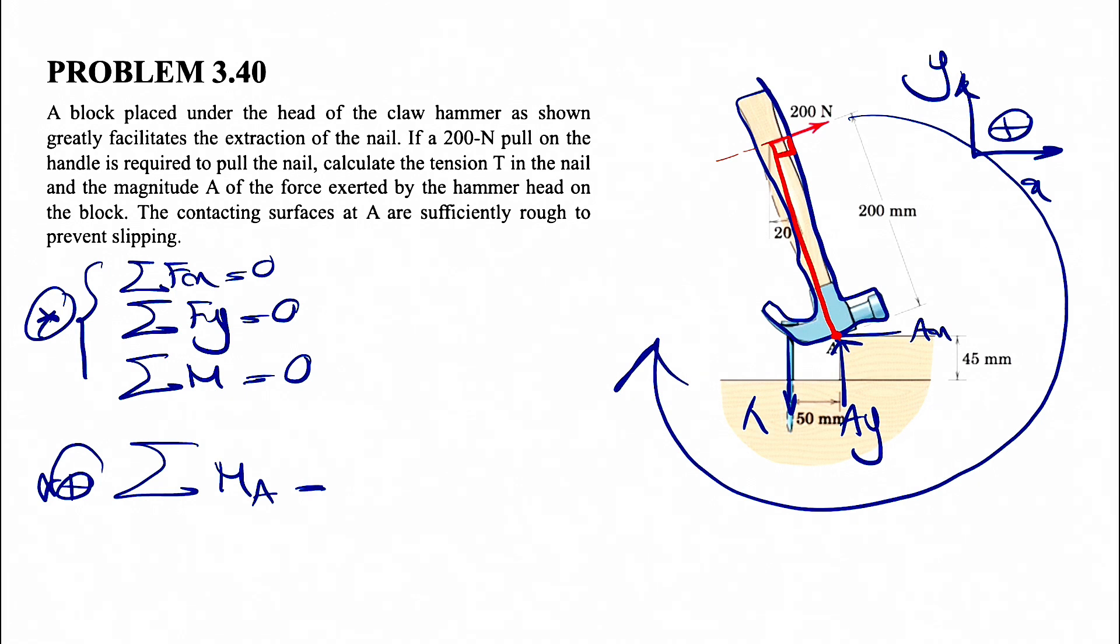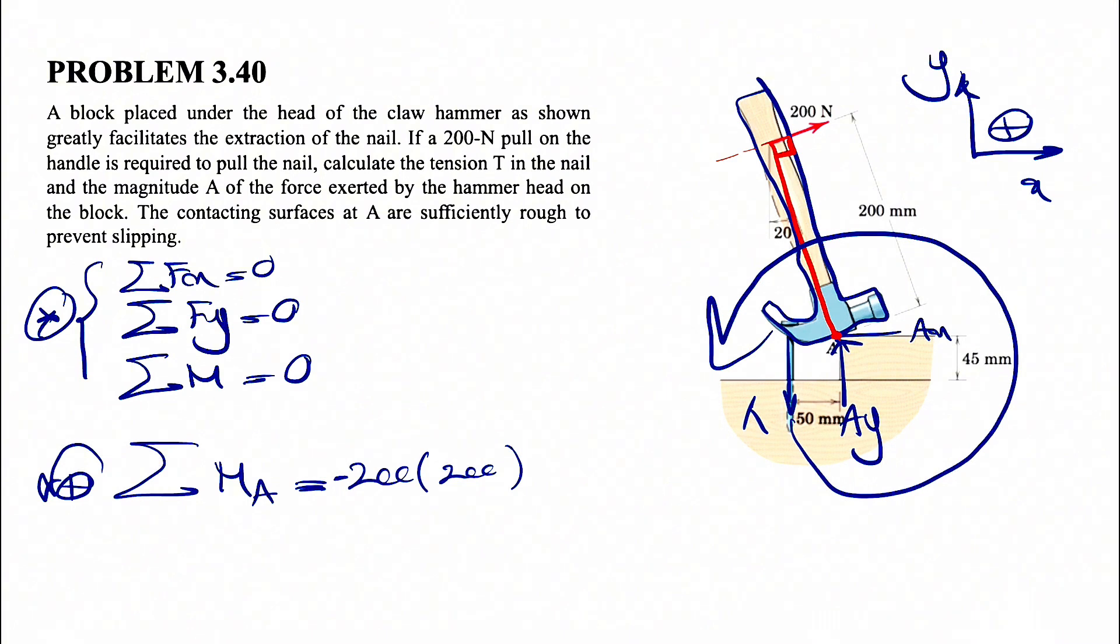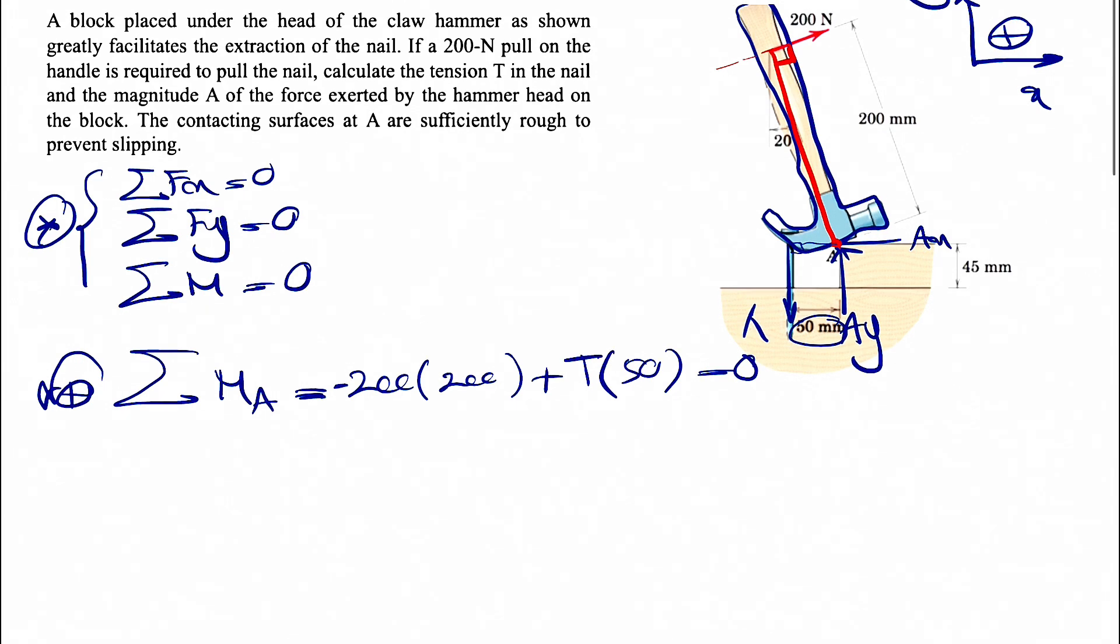So the moment of the 200, as we can see, is a clockwise moment. So 200 times the distance would be 200 millimeter. We don't need to do the unit conversion because it will be canceled at the end. And the moment is also clockwise, so we have a negative sign. And we're going to have the moment of the tension in the nail. This is going to be counterclockwise.